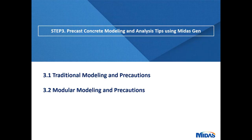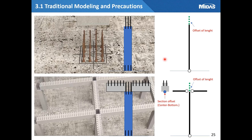In Chapter 1 and Chapter 2, we looked at the design concept for precast and the latest trend of modular architecture. Chapter 3 discusses the traditional precast concrete system and the recent modular system method in terms of modeling and analysis — I will explain what points to pay attention to and how to apply them. First, for the boundary condition for the lower part of the column, the setting is for pin condition and the section offset is reflected for the center-bottom option. We can easily apply this by setting the connecting side as a pin point and putting the center-bottom option in the section offset in Midas Gen.